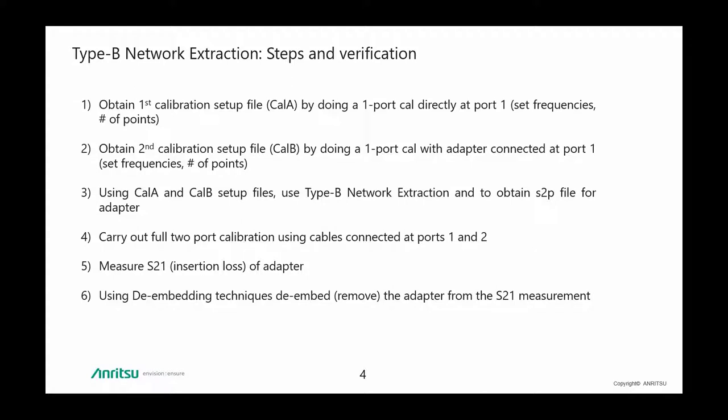The second calibration involves connecting the adapter — the 3 dB attenuator — to the test port and carrying out another one-port calibration, but this time with the calibration standards connected to one end of the 3 dB pad. The next step is to use the type B network extraction method to obtain an S2P file for the attenuator.